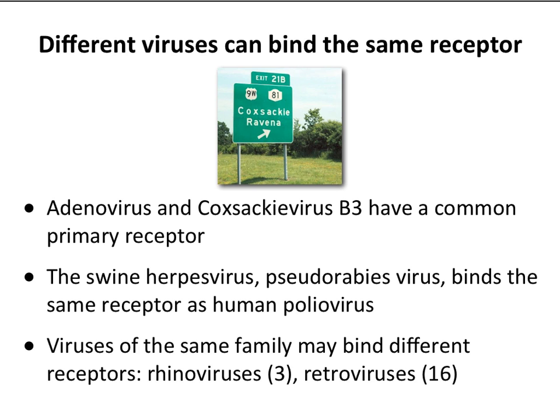Coxsackievirus, by the way, is named after Coxsackie, New York — exit 21B on the New York State Thruway. It was named there because there was an outbreak in the 1940s which was thought to be polio but turned out to be a different virus, so they named it after the town.